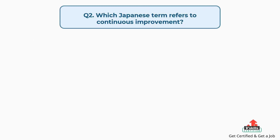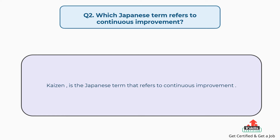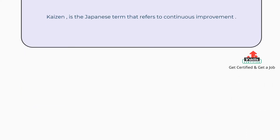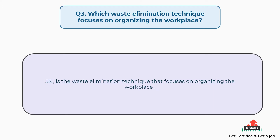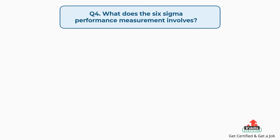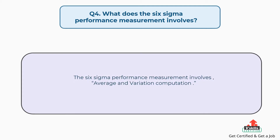Question number two: which Japanese term refers to continuous improvement? The answer is, Kaizen is the Japanese term that refers to continuous improvement. Question number three: which waste elimination technique focuses on organizing the workplace? The answer is, 5-S is the waste elimination technique that focuses on organizing the workplace. Question number four: what does the Six Sigma performance measurement involve? The answer is, the Six Sigma performance measurement involves average and variation computation.